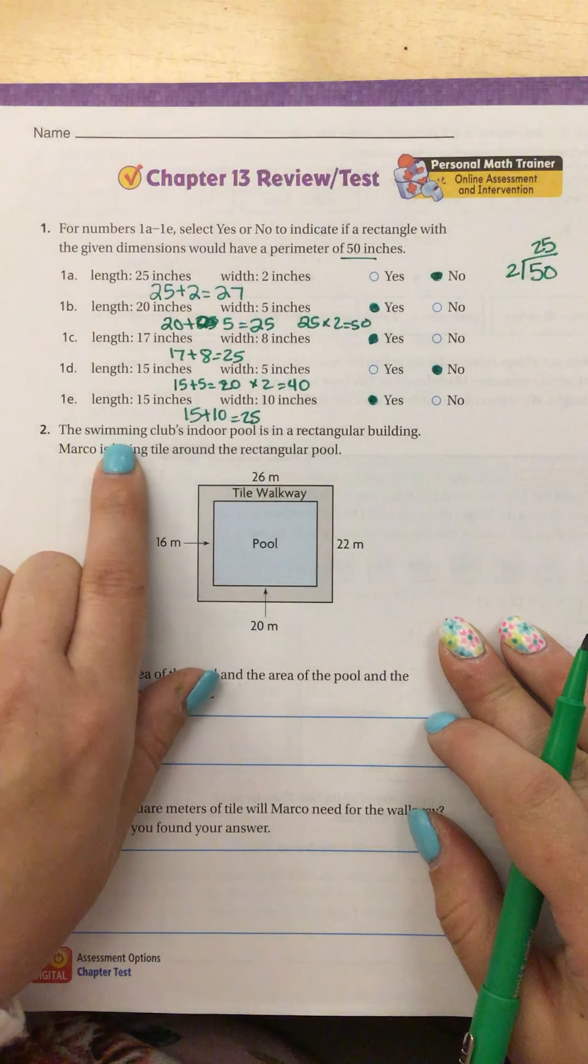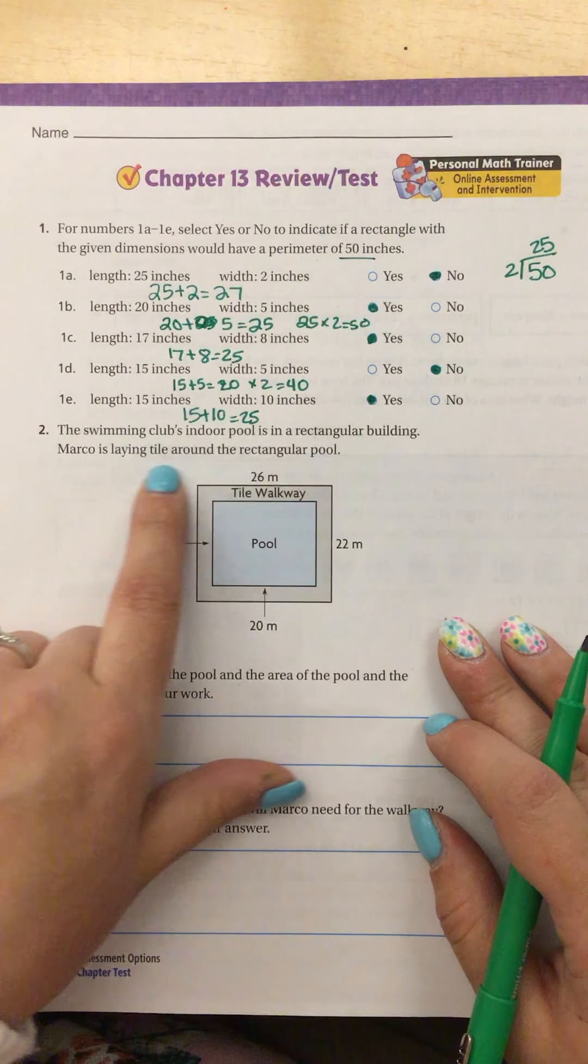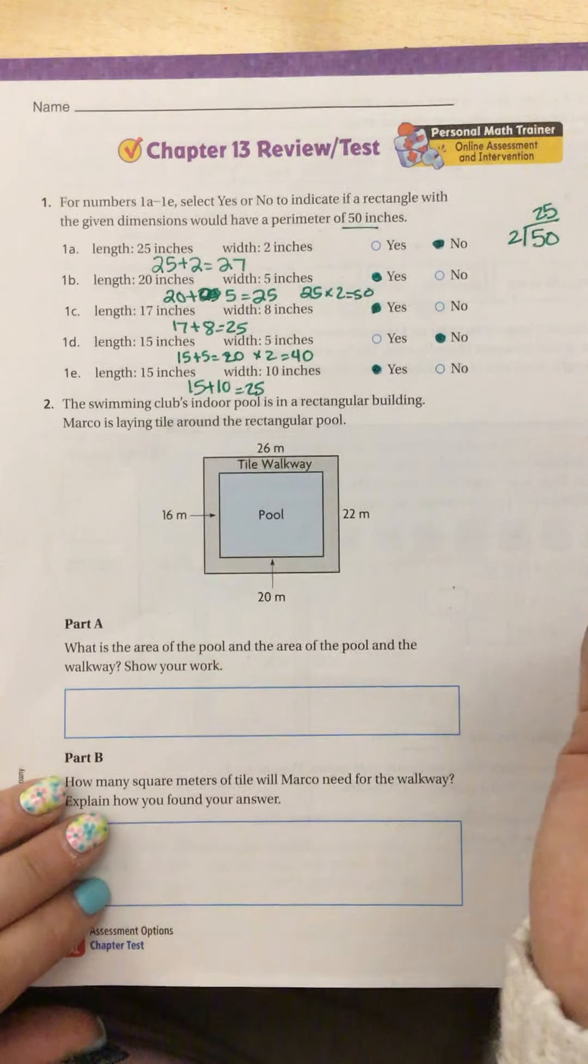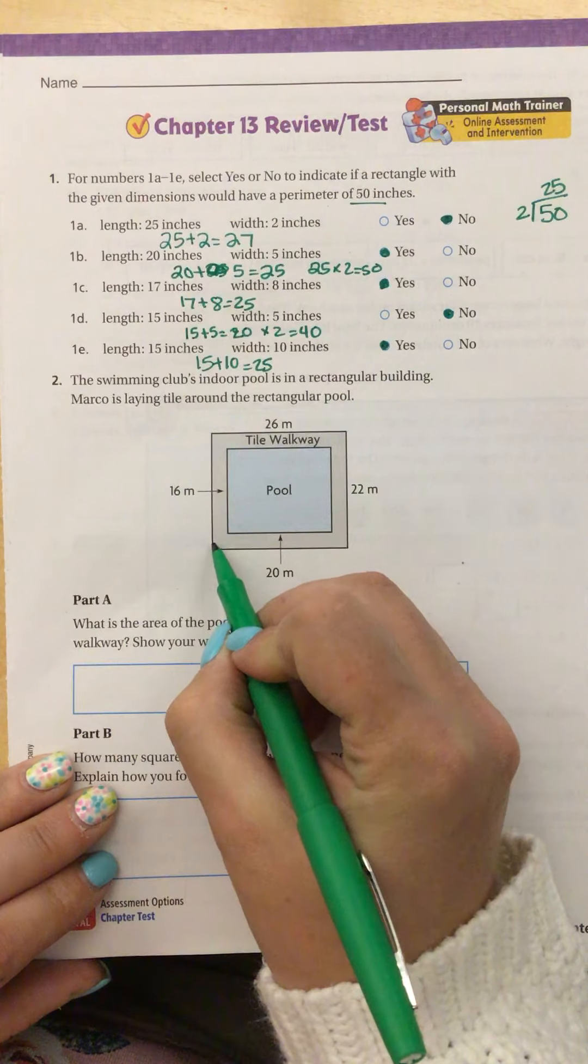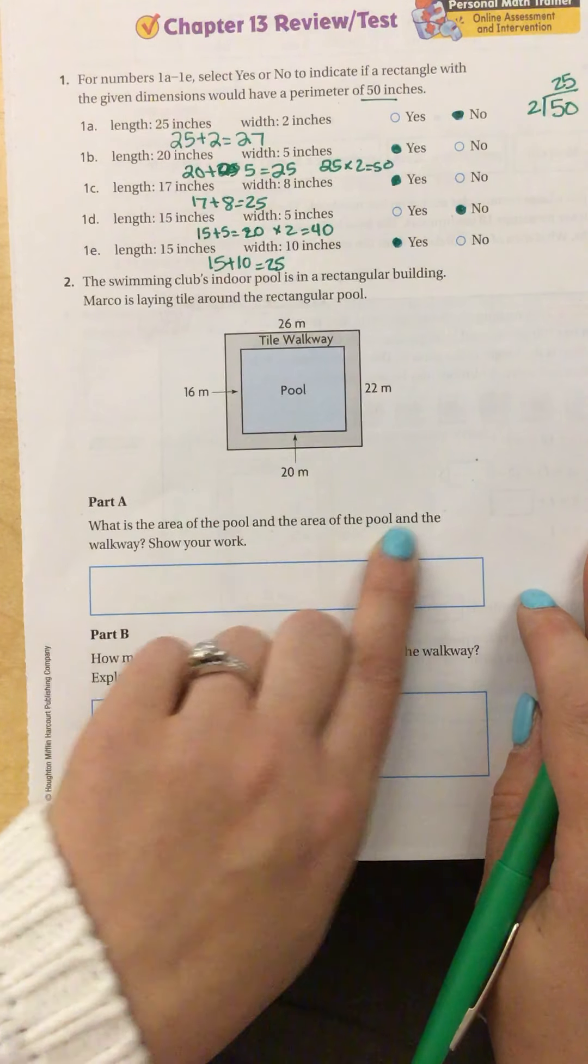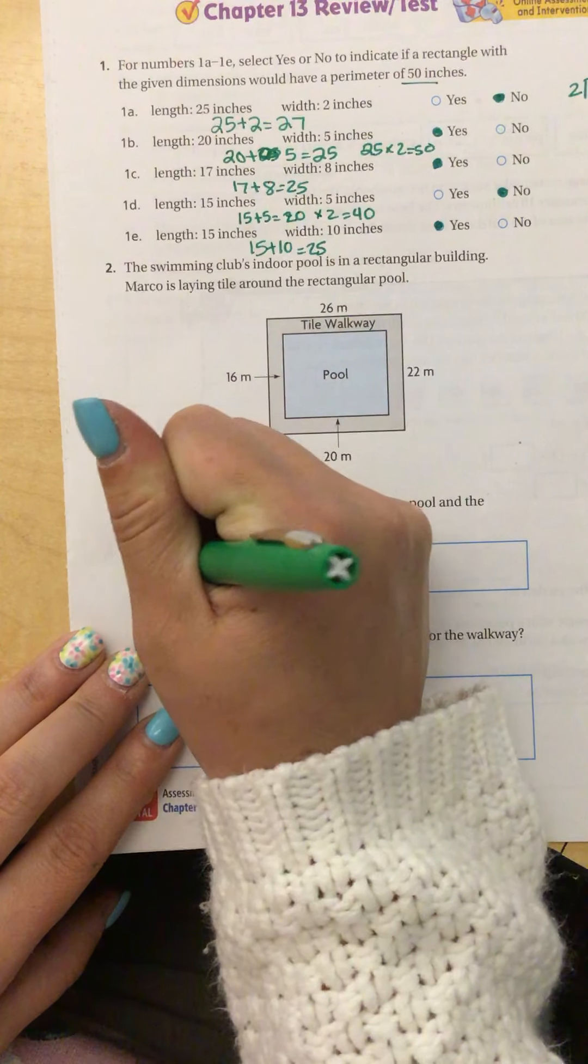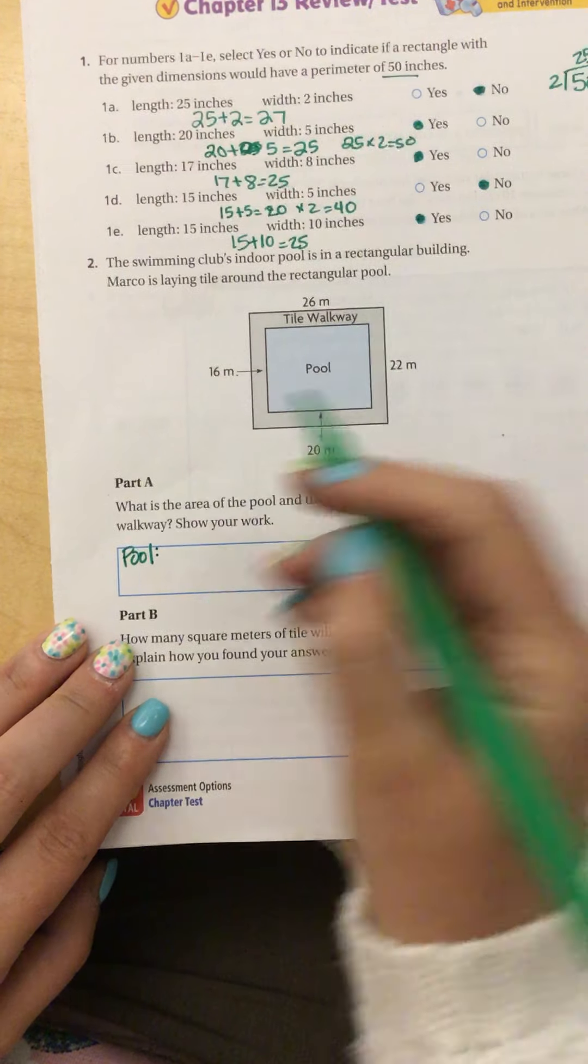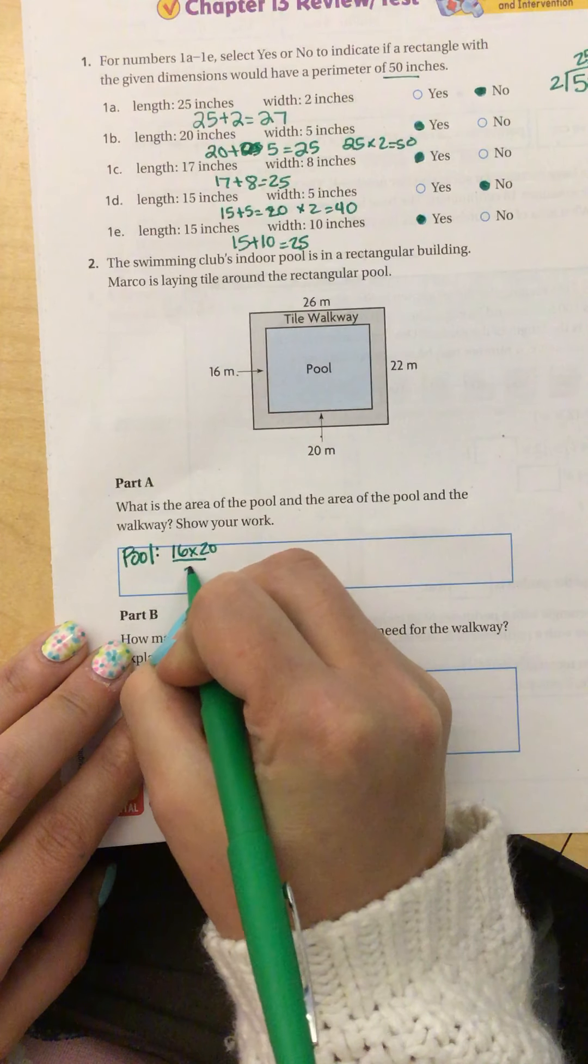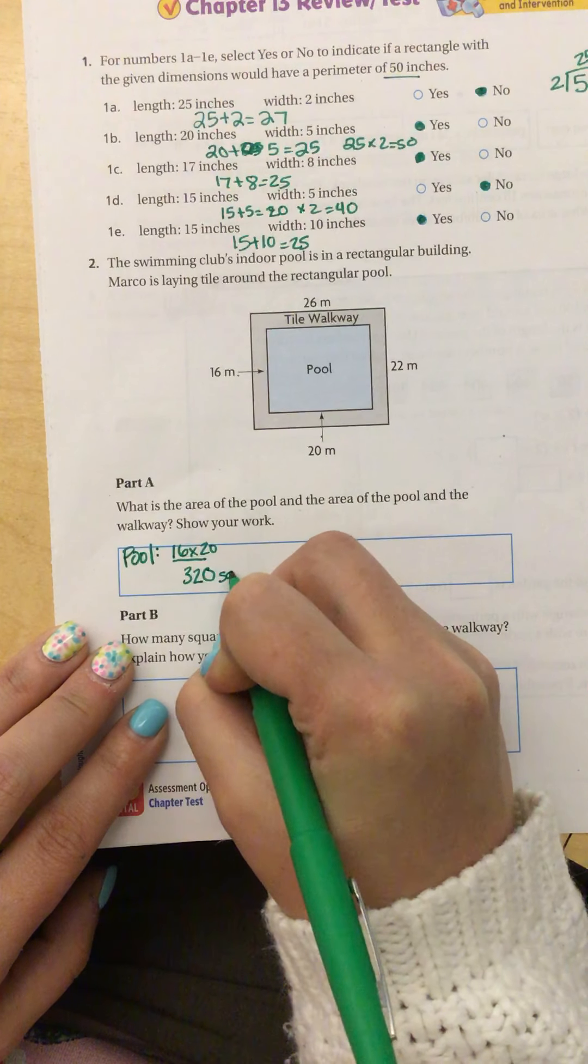All right, the next one. The swimming club's indoor pool is in a rectangular building. Marco is laying tile around the rectangular pool. So really, we're trying to find the area of this gray part. What is the area of the pool and the area of the walkway? Well, the pool, I would do 16 times 20. 16 times 2 is 32, so that would be 320 square meters.